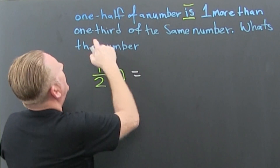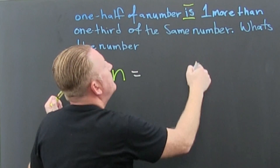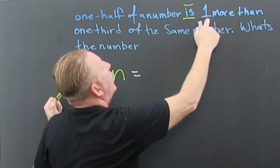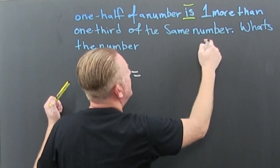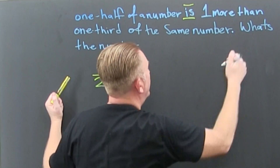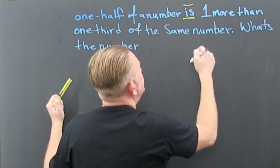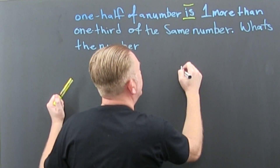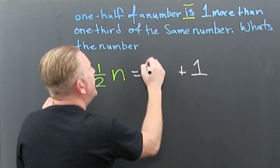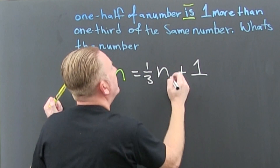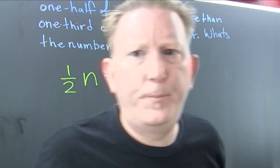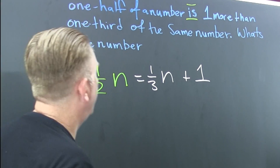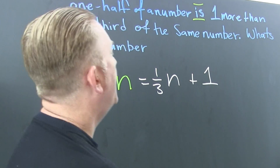And then one third of the same number. Is one more than one third of the same number. So the equation is: one half N equals one third N plus one.